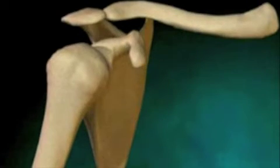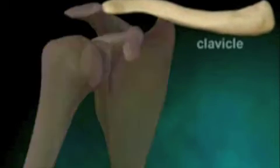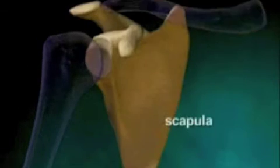The three bones that make up the shoulder joint include the clavicle (collarbone), scapula (shoulder blade), and humerus (long bone of the arm).